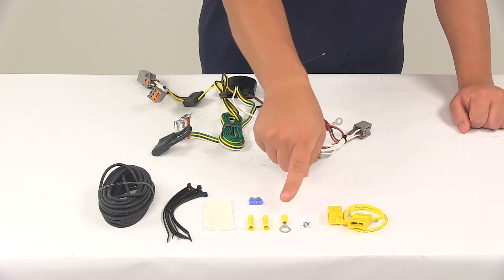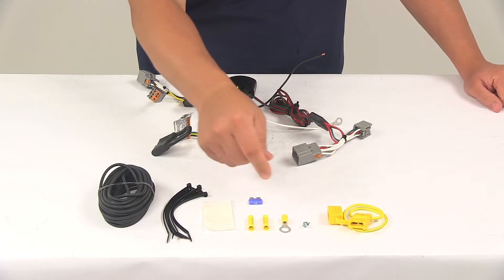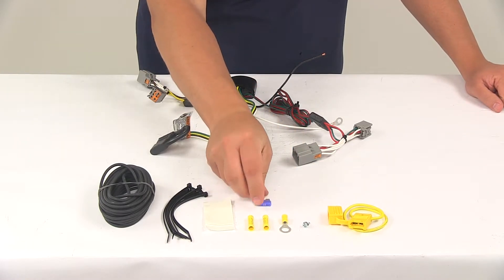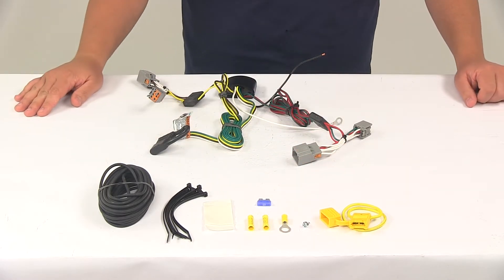The other half of the fuse holder gets a ring terminal attached to it, and connects to the positive post of the vehicle battery. It's going to come with your 15 amp fuse, goes directly in the fuse holder, and then it's got the fuse cap that goes over to keep it safe and protected.